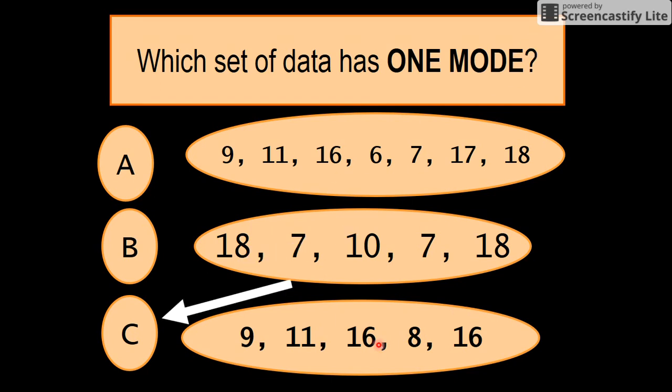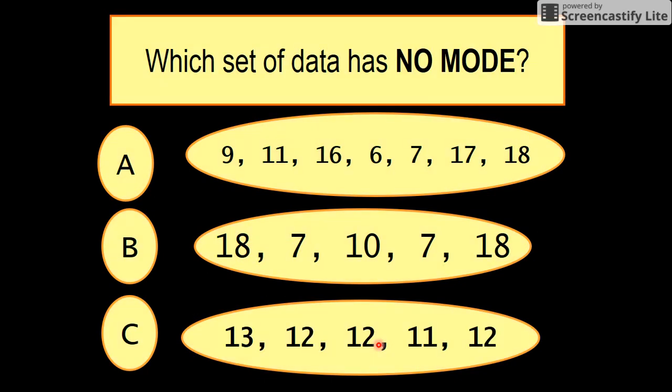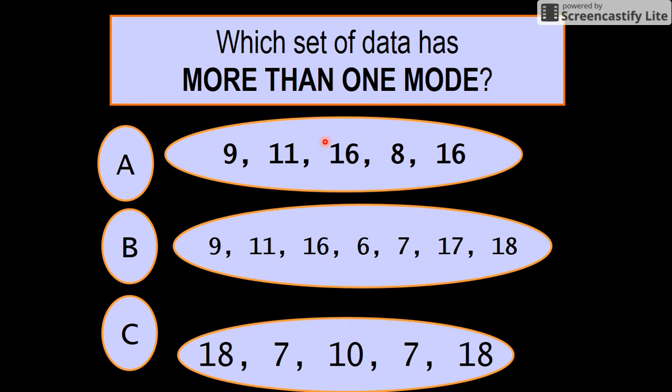Which data has no mode? 9, 11, 16, 6, 7, 17, 18—none of those have been repeated. Those have repeated and those have been repeated, so I would say A. Yep. And more than one mode? Well, there's 18, 7, 10, 7, 18, so there's two lots of modes in this one. That one's got one, so I would say C. The 7s and 18s.